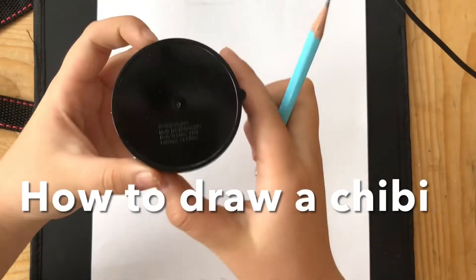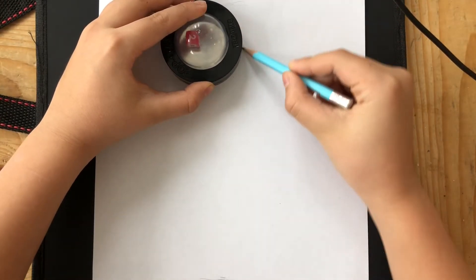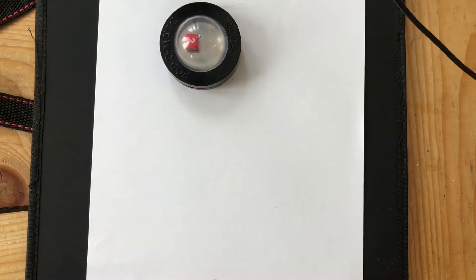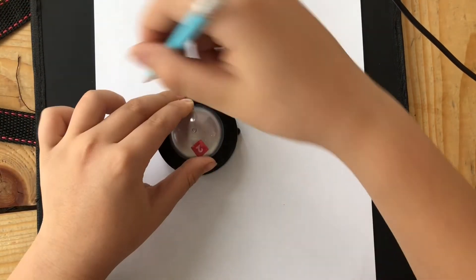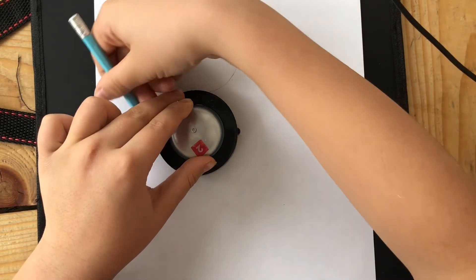Hey guys, welcome to another drawing video. Today I'm going to show you how to draw a chibi. We're drawing Naruto today. First, you have to use a round object to draw three circles, just like a snowman. For example, you can use a cup.